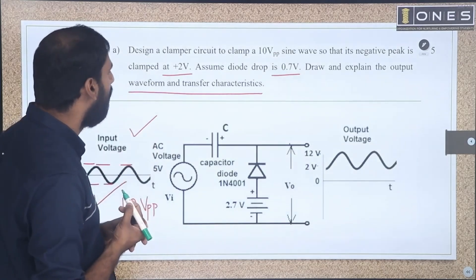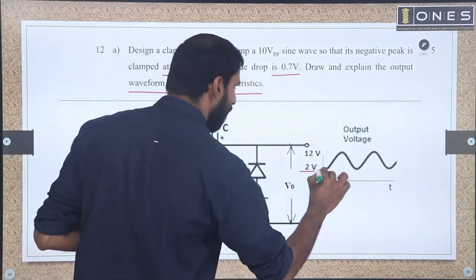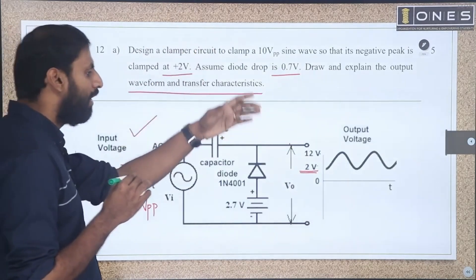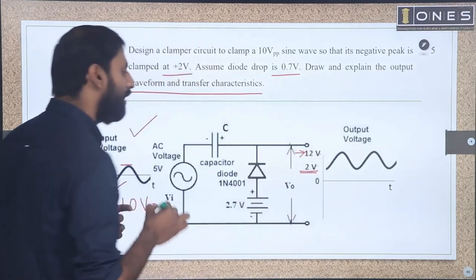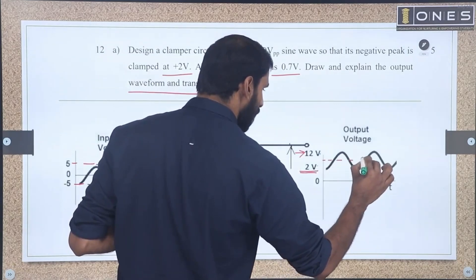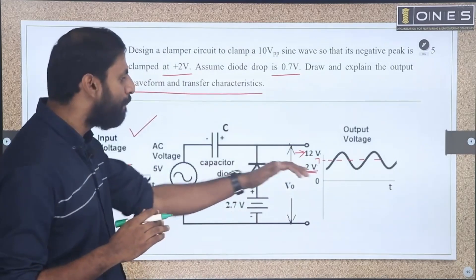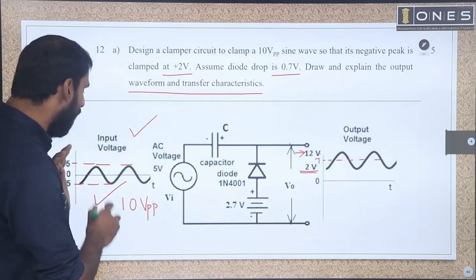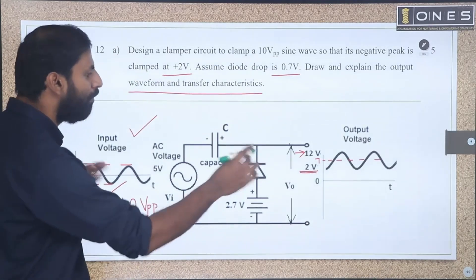The negative peak is clamped at 2 volt on the output side. The positive peak in the output is at 12 volts. So the clamping action adds 7 volts — we have a 7 volt shift added in the output waveform.